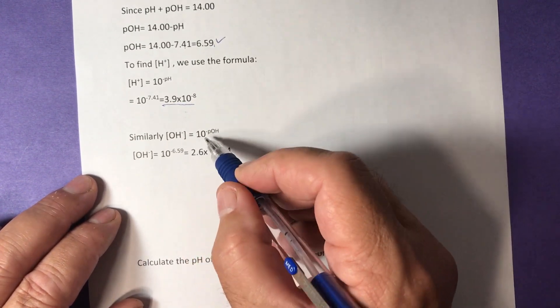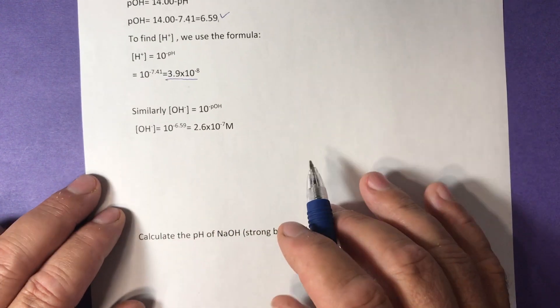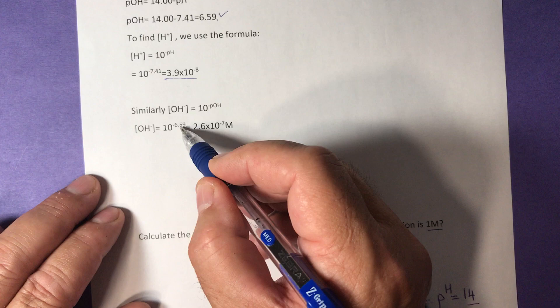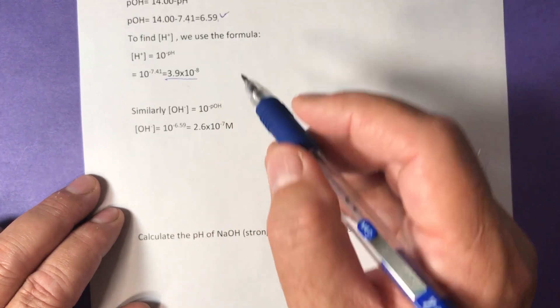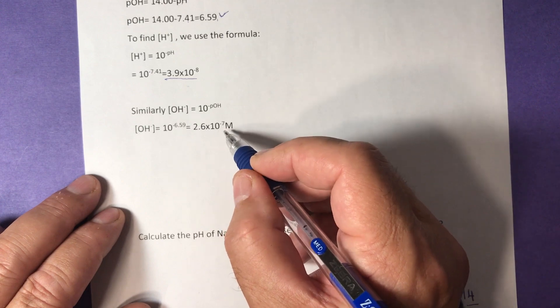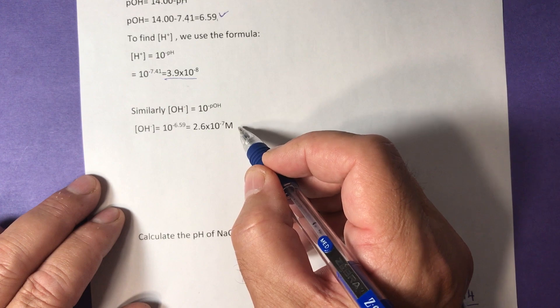For the OH minus, we use the formula 10 to negative pOH. OH minus equals 10 to negative 6.59, which we got earlier. And by doing the calculation, we have 2.6 times 10 to negative 7 molar.